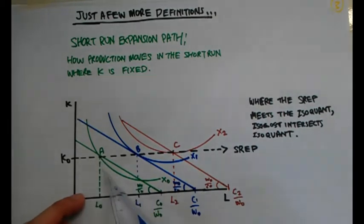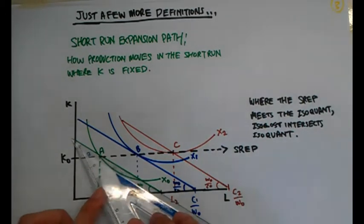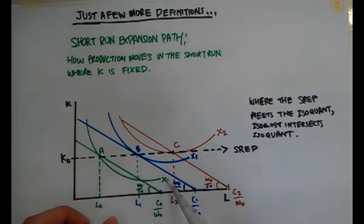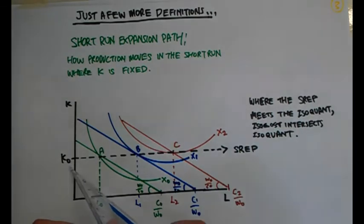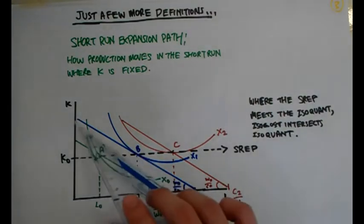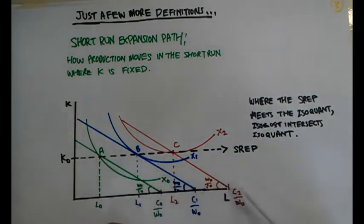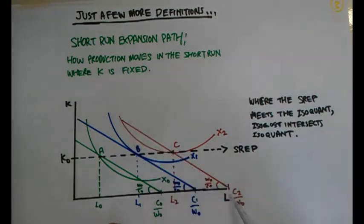Looking at the green lines: this is our expansion path and our Isoquant at x-naught. The firm is producing x-naught where the expansion path touches the Isoquant — that is where we determine our cost, so we draw the Isocost here. The firm is paying c-naught to produce this amount, using k-naught and l-naught quantities of capital and labour. For the next Isoquant, the firm pays c-1, a higher cost. As the firm produces more, it must increase its labour but cannot increase its capital.